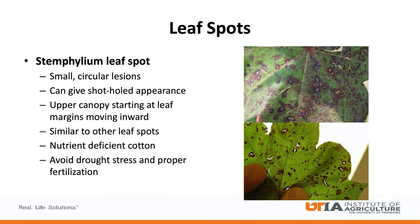The second disease associated with the leaf spot complex is Stemphylium leaf spot. Stemphylium leaf spot starts as small circular lesions that progressively become larger. Lesions can sometimes fall out, also giving a shot hole appearance. This disease starts in the upper canopy at the leaf margins and progressively moves inward. Similar to other leaf spots, it is mostly present in nutrient-deficient cotton, especially with a lack of potassium. Avoiding drought stress and having adequate amounts of potassium can help prevent this disease.